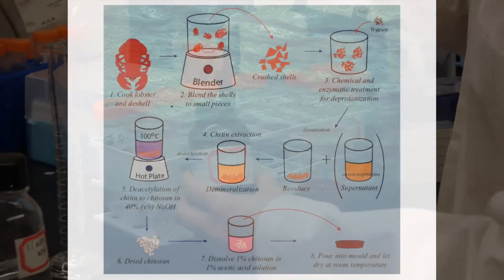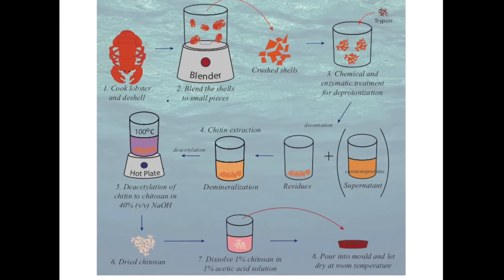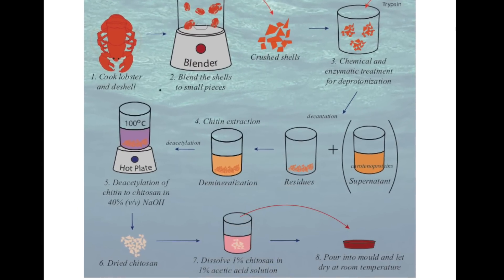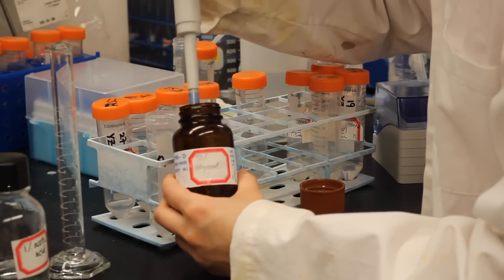The objective of the study was to prepare chitosan biodegradable plastic films from lobster waste and compare them with their counterpart made from commercial shrimp chitosan.